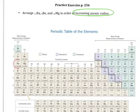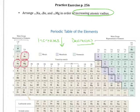They're asking us about sodium, beryllium, and magnesium. You should remember that in general, the atomic radius increases as we go down a group and decreases as we move to the right.